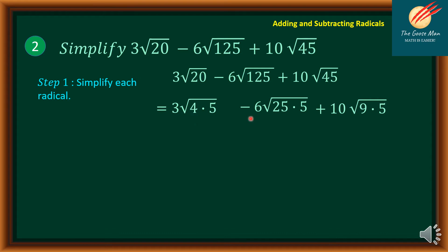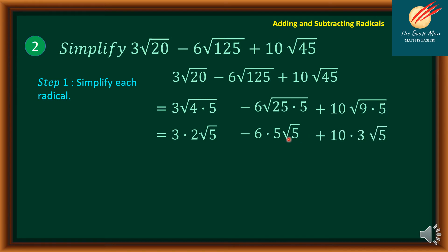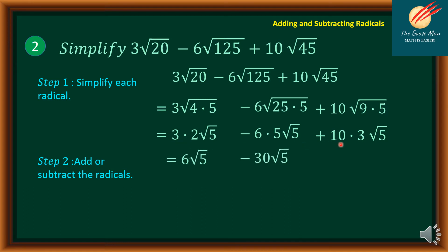Take the square roots of 4, 25, and 9 respectively. So we have 3 times 2 square root of 5, minus 6 times 5 square root of 5, plus 10 times 3 square root of 5. Simplifying the coefficients: 6 square root of 5 minus 30 square root of 5 plus 30 square root of 5. The negative 30 and positive 30 cancel, so the final answer is 6 square root of 5.